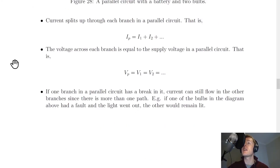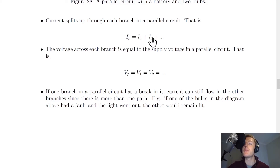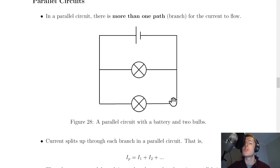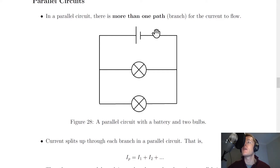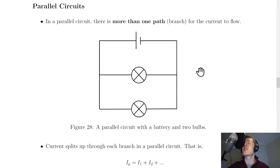The first rule for parallel circuits is to do with the current. This says that current splits up through each branch in a parallel circuit. That is, IP — using IP for total current in parallel — is equal to I1 plus I2 plus dot dot dot. So looking back at this circuit, the current is going to pass along and then split up across each of the components.